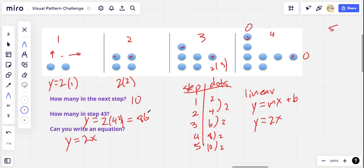So how did that go? Did you see that this was a linear pattern? Did you get 10 for step five? Let me know. Thanks, everybody.